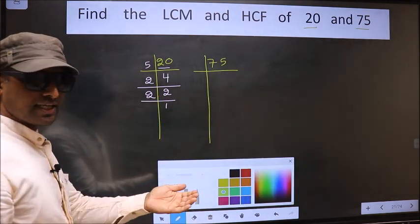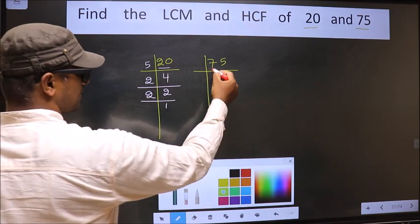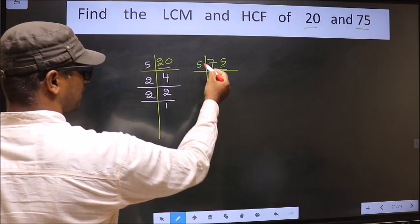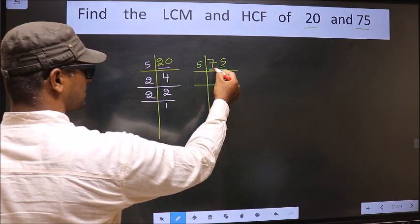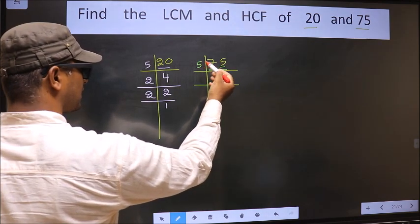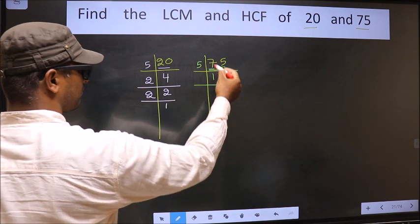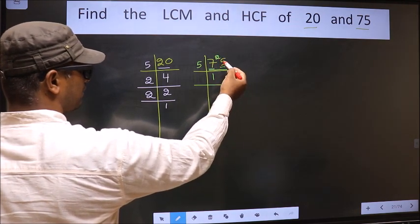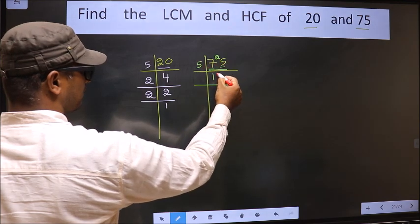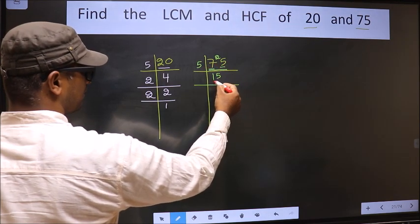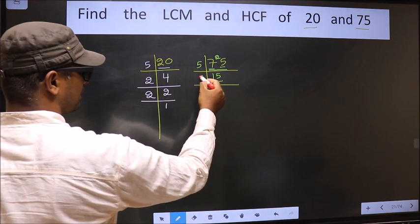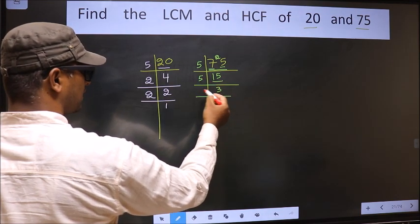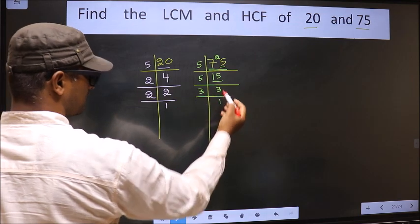Now the other number, 75. Since the last digit is 5, we take 5 as divisor. 5 goes into 75 fifteen times. Then 5 goes into 15 three times. Now we have 3. 3 is a prime number, so 3 divides 3 giving 1.